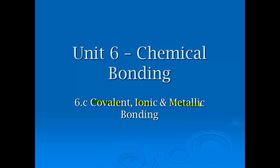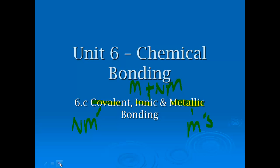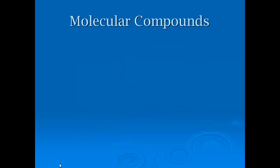We've already introduced these, and as a review: covalent bonds are going to be between non-metals on the periodic table, ionic is going to be between a metal and a non-metal, and metallic are going to be metals only. Knowing those differences on the periodic table is really crucial to being able to conceptualize this.